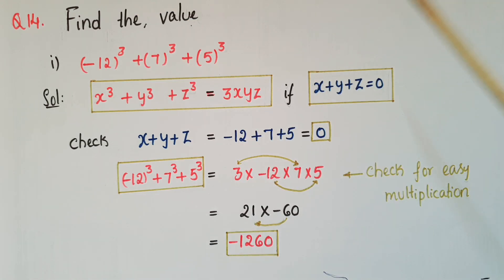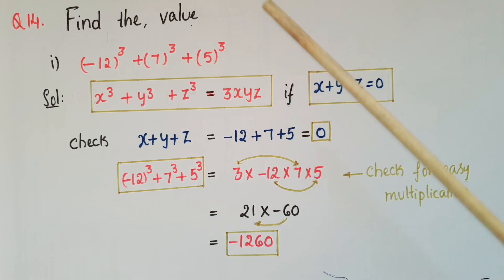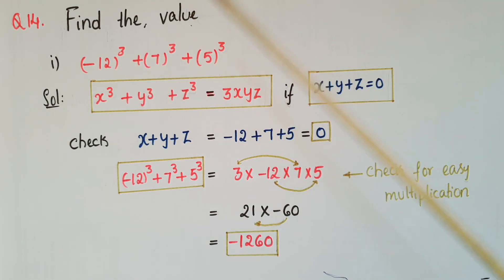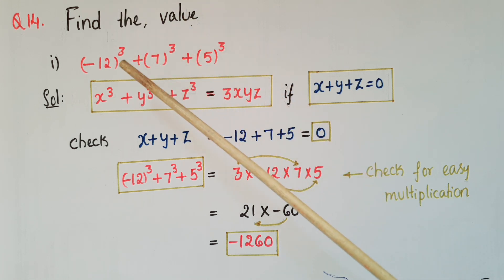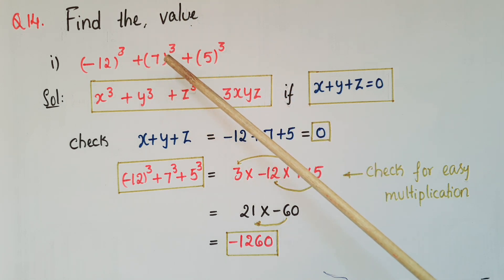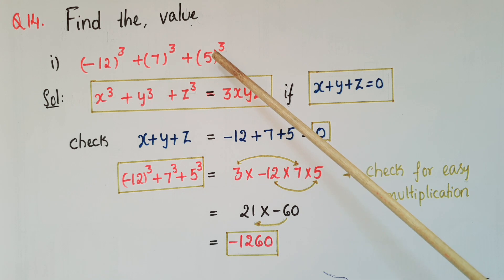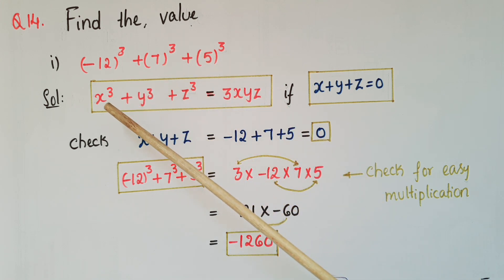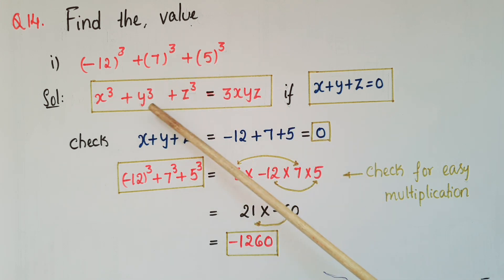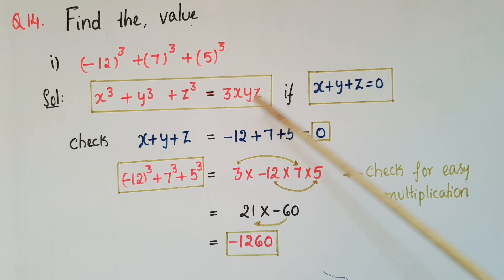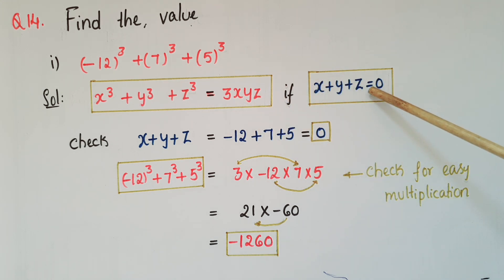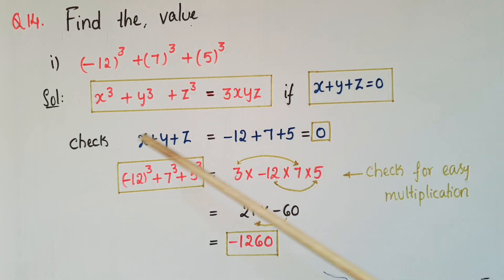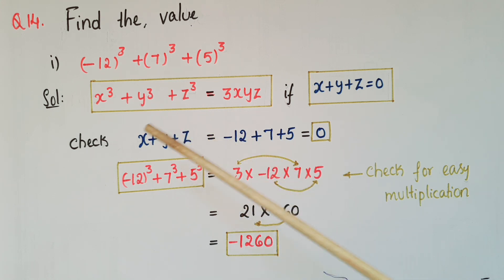Now, using the same formula, I am going to solve question number 14: find the value of minus 12 whole cube plus 7 cube plus 5 cube. We know that x cube plus y cube plus z cube is equal to 3xyz if x plus y plus z is equal to 0. So first, we have to check whether x plus y plus z is equal to 0 or not.